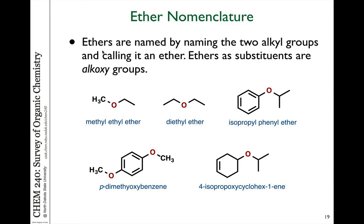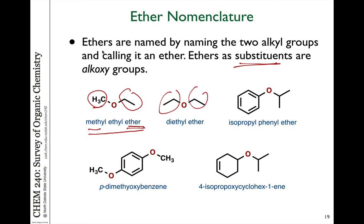In naming ethers according to IUPAC naming rules, we consider the two carbon groups that are attached to the oxygen as substituents on the oxygen. So this is an ether molecule in which one side has a methyl group and the other side has an ethyl group — this is methyl ethyl ether. That's the formal name for this molecule. If it's two of the same groups we can use di; for example, diethyl ether.